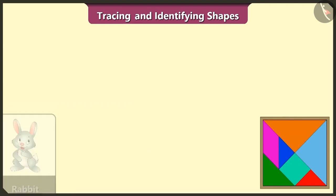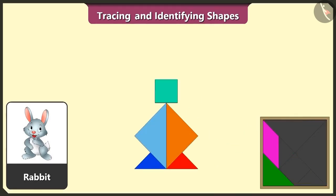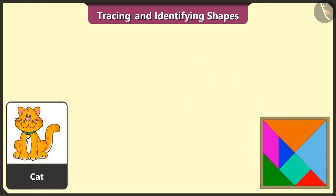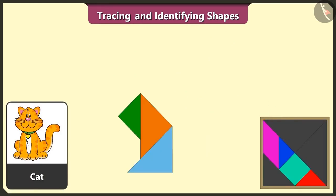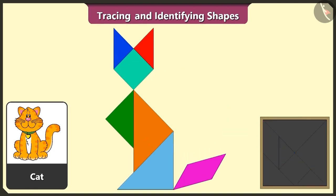This is a rabbit. Now, we will try to create a rabbit using 4 triangles, 1 square and 1 more triangle and 1 quadrilateral. Rabbit is ready. This is a cat. So, let's make a cat using 3 triangles, 1 quadrilateral, 1 square and the remaining 2 triangles. See, cat is ready.